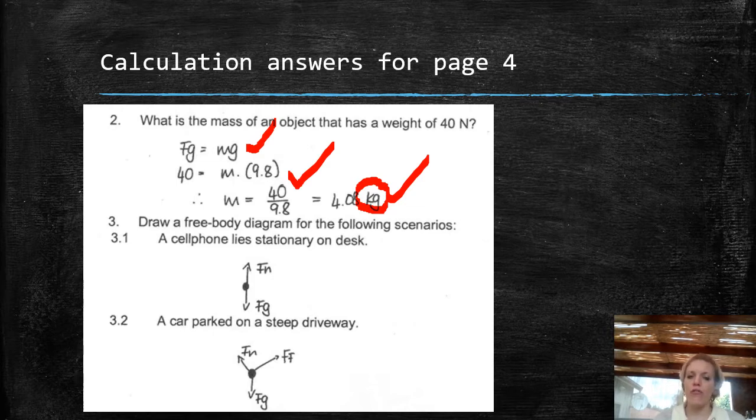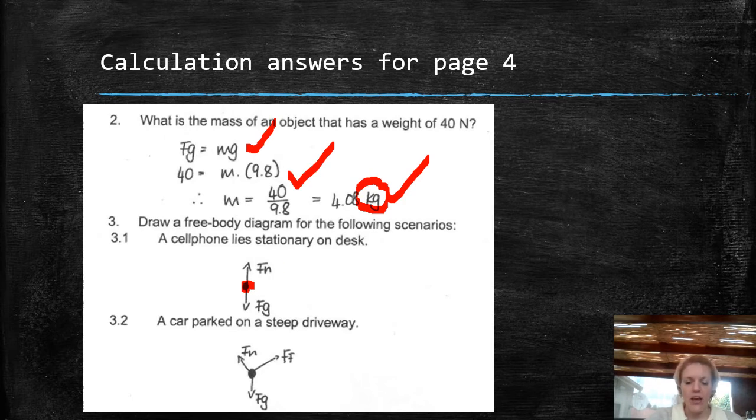Question three asks, draw a free body diagram of the following scenarios. So if you got this wrong, please don't stress. It does take some practice, but you'll see now it's actually quite easy. First one is a cell phone that lies stationary on a desk. In other words, it's not moving. So what are the two forces that are at play? Remember, normal force is a stationary force, and it's upwards, it's perpendicular from the object. This is my object here. This is my cell phone. This is my normal force. And then I will always have gravity, which is FG. Please make sure you put the abbreviations on.